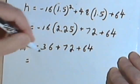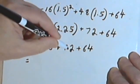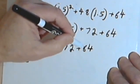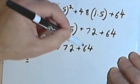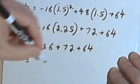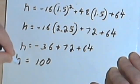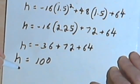And what does that equal? Well, 36 from 72 is 36. And 36 plus 64 is 100. So its maximum height is going to be 100.